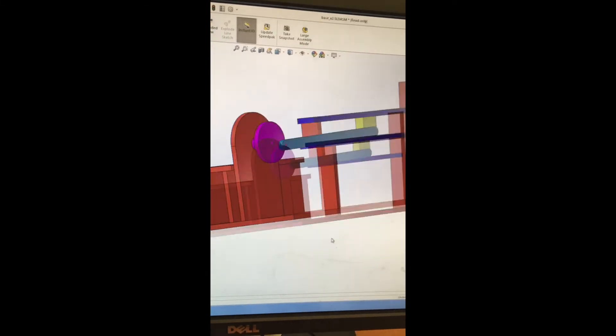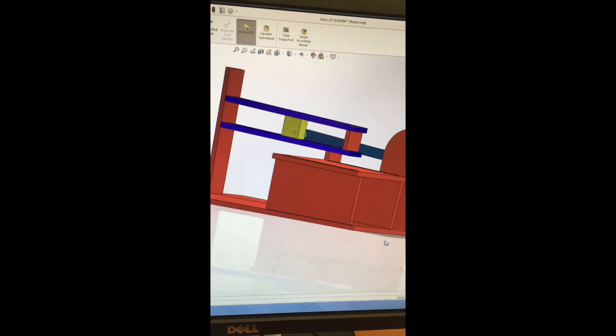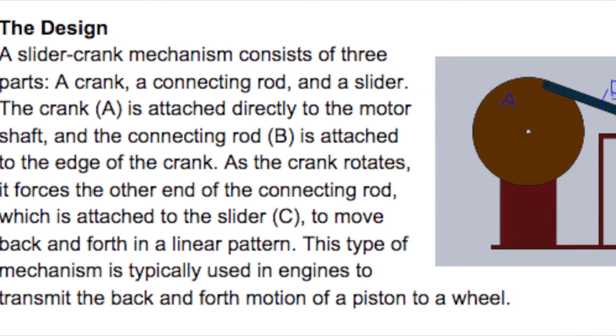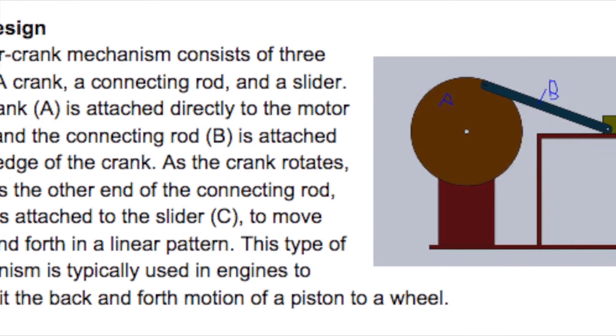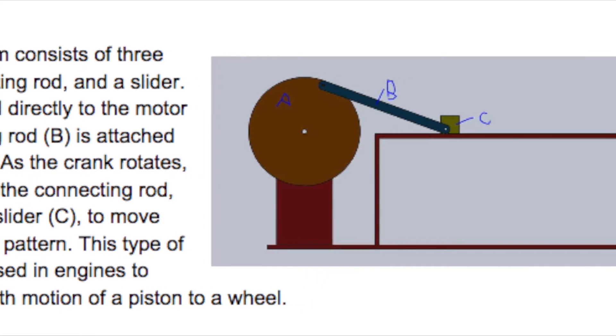In this project, we needed to convert rotary motion to linear motion. There are a lot of ways to do this, but the design concept we chose was the slider crank mechanism. The way this works is that a crank arm attached to the spinning motor shaft moves a connecting rod, which in turn moves the slider back and forth.